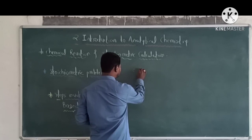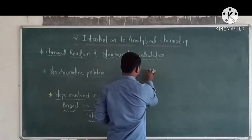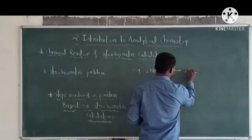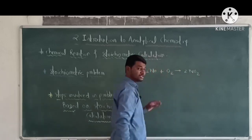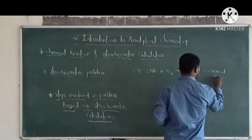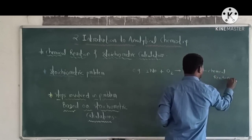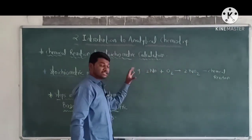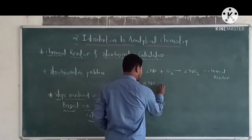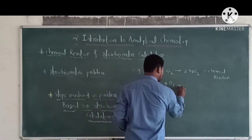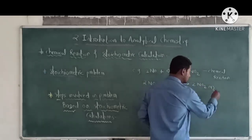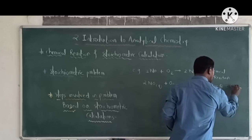For example, let us consider: 2NO reacts with oxygen to give 2NO₂. This is the chemical reaction or equation. The balanced chemical equation is: gaseous 2NO reacts with gaseous oxygen to give gaseous 2NO₂. This is the balanced chemical equation.